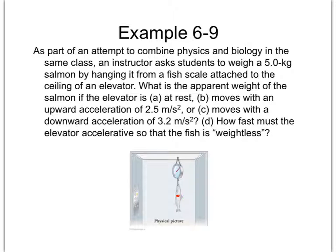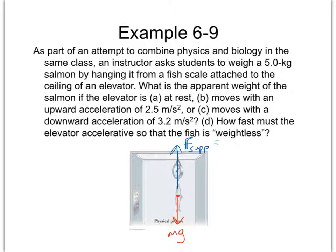The fish will always have a weight force, regardless of what direction the elevator is moving. It's going to be directed downwards, and we call that MG. The upward force that supports the fish and causes the fish to move with the rest of the elevator — we can call it the supporting force. That should be a capital F. This scale and hook is the only thing that is supporting the fish.